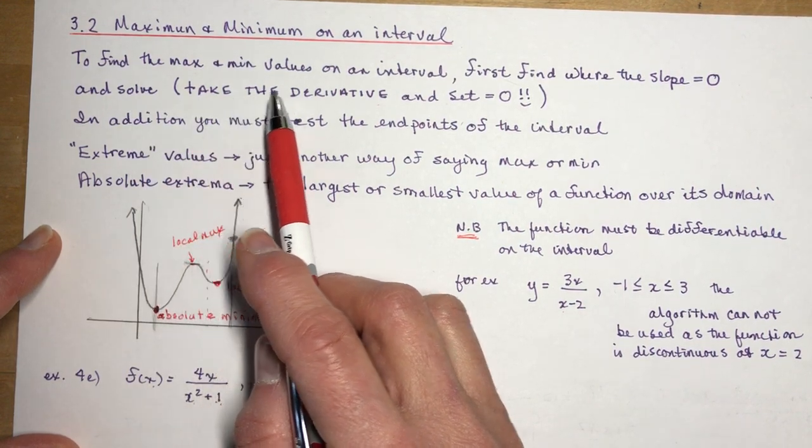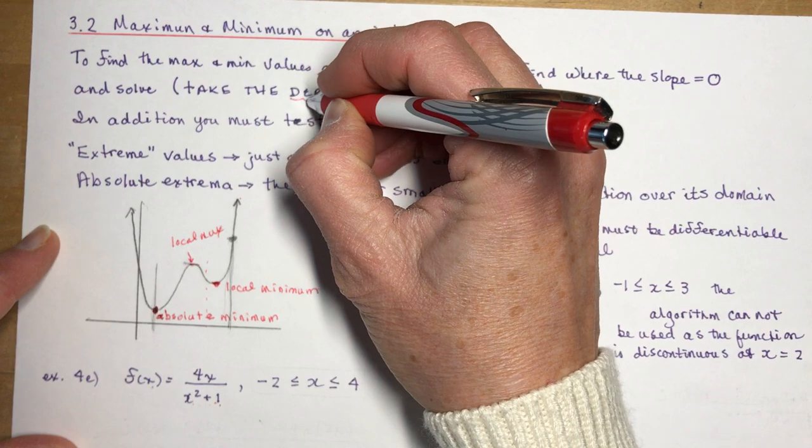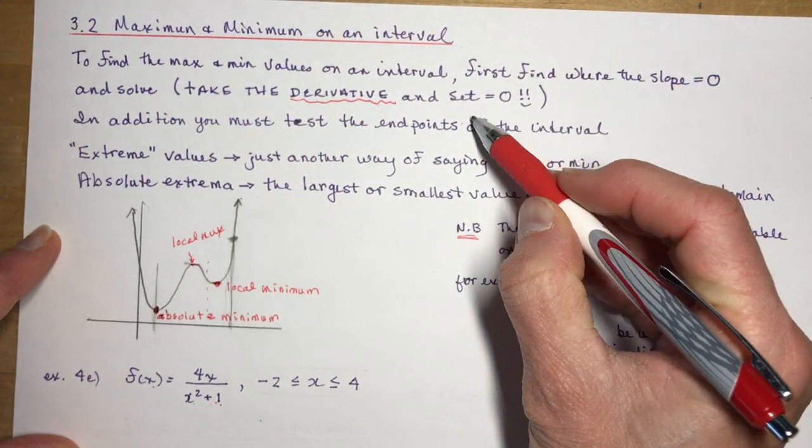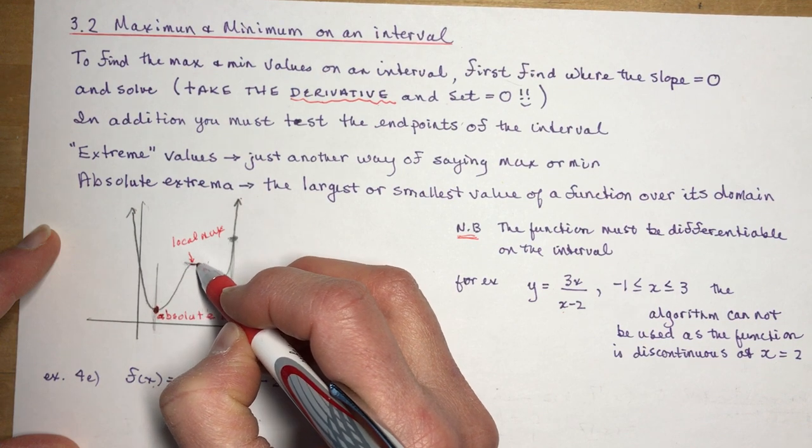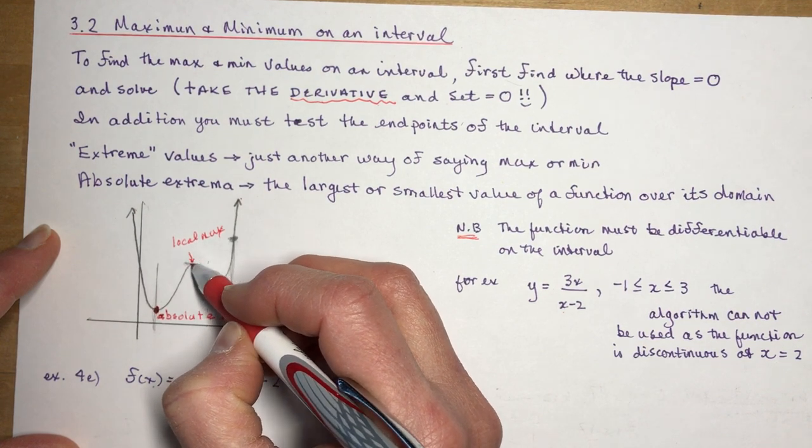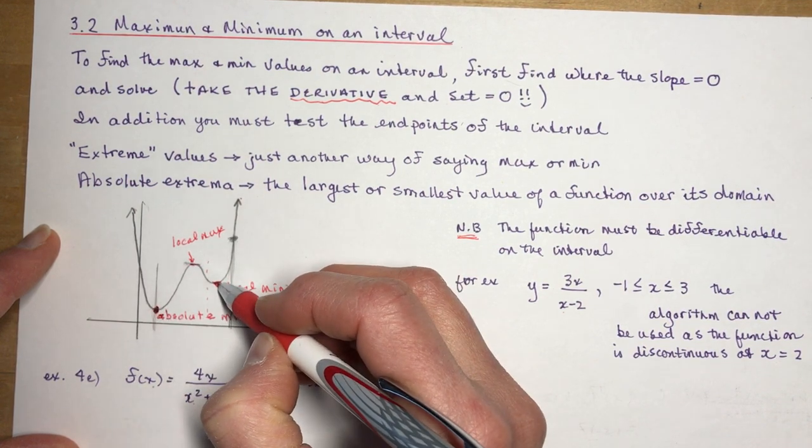That translates into take the derivative, right, the derivative we're doing calculus and set it equal to zero because that's where the slope is going to be zero. Where the slope is zero is where you have maximum or minimum values.